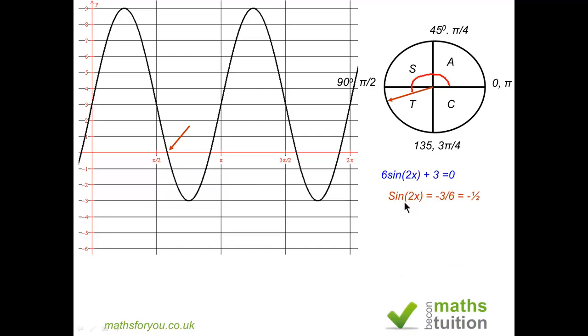If we move the 3 and divide by 6, we get sin 2x equals minus a half. Now ignoring the minus sign for now, 2x is 30 so x is 15.